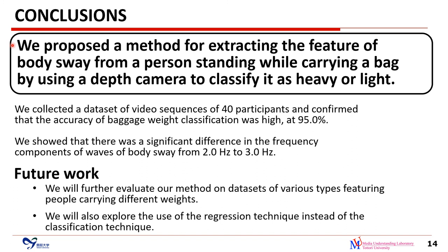To conclude, we propose a method for extracting the feature of body sway from a person standing while carrying a bag, using a depth camera to classify it as heavy or light. We collected a dataset of video sequences of 40 participants and confirmed that the accuracy of baggage weight classification was high at 95%. We showed that there was a significant difference in the frequency components of body sway waves from 2 Hz to 3 Hz. In future work, we will further evaluate our method on datasets featuring people carrying different weights, and explore the use of regression instead of classification techniques. Thank you for listening.